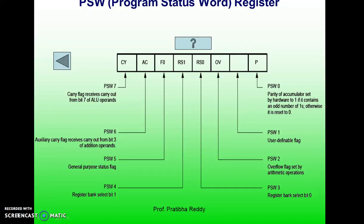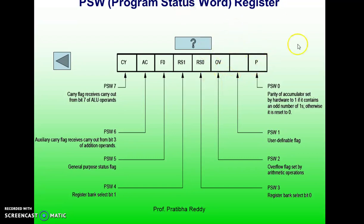Let us discuss the Program Status Word (PSW) register of the 8051 microcontroller. The size of this register is 8 bits. PSW0 is the P bit, which is the parity bit — the parity of the accumulator. This is set by hardware to 1 if the accumulator contains an odd number of 1s; otherwise it is reset to 0.